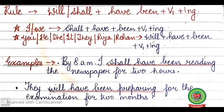So our rule with 'I' and 'we' is: shall plus have been plus V1 plus ing. With any other subject it is: will plus have been plus V1 plus ing. See the examples: 'By 8 am I shall have been reading the newspaper for two hours.' 'They will have been preparing for the examination for two months.' In the first sentence the subject is 'I', so we use 'shall'; with any other subject we use 'will'.